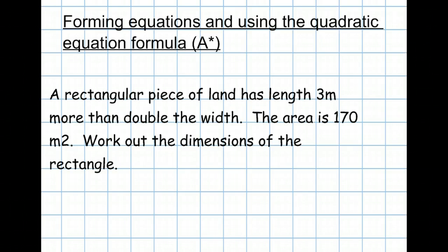Let's focus our mind now by looking at this particular worded question. A rectangular piece of land has a length 3 metres more than double the width. The area is 170 metres squared. Work out the dimensions of the rectangle.